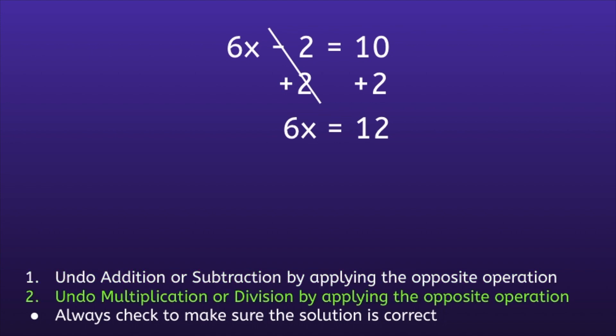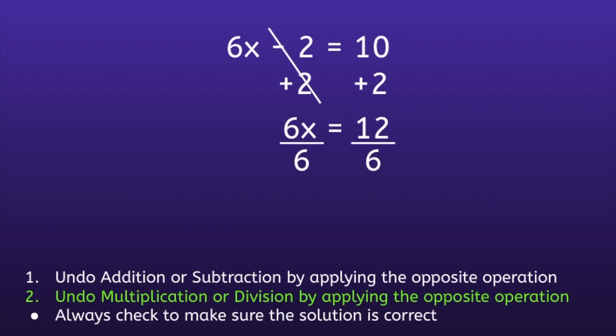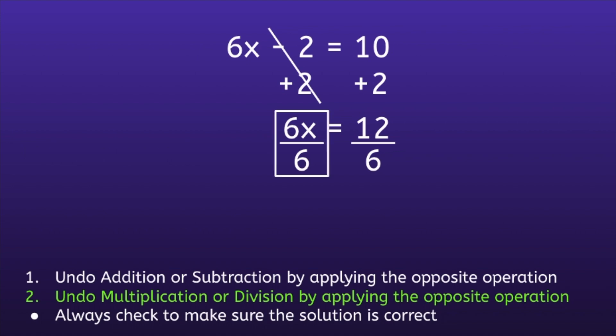Moving on to step two: undo multiplication or division by applying the opposite operation. In this one, we have a number in front of the variable. This is called a coefficient. A coefficient is a number being multiplied by a variable. So we want to do the opposite of multiplying by 6, which is dividing by 6. That fraction bar in the middle means division. If we focus on the left side, we have 6x divided by 6, and 6 divided by 6 is equal to 1, so that will leave us with 1x or just x.